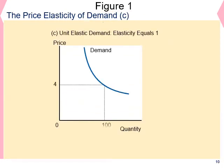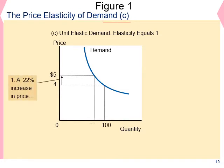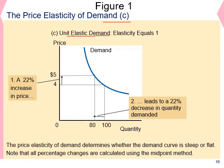The next panel shows unit elasticity demand where the value of elasticity is equal to 1. In this situation, a 20% increase in the price of the good led to a 20% decrease in the quantity demanded. Therefore, the value of elasticity is exactly 1 — 22 divided by 22 is equal to 1. A 1% increase in the price will lead to a 1% decrease in the quantity.